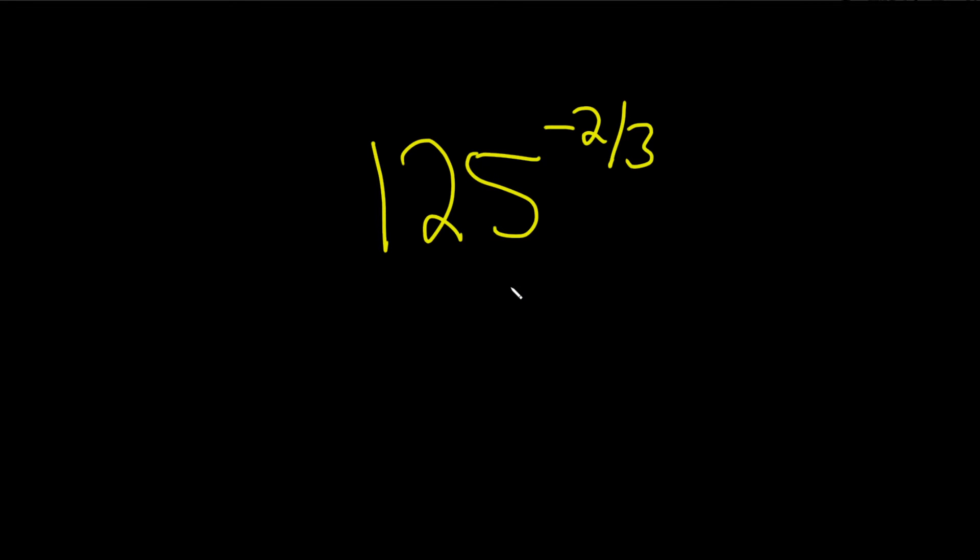We have to evaluate this expression. We have 125 to the negative two-thirds power. So basically, let's start by getting rid of the negative. To do that, we'll bring this downstairs like this, because this is over one.